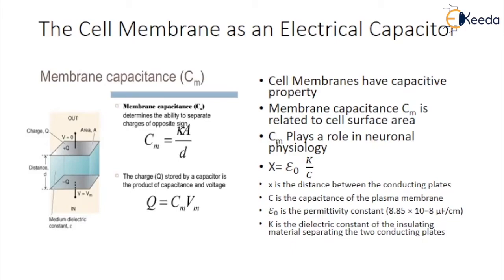Capacitance is directly proportional to the area of the plates and inversely proportional to the distance separating the two plates. Capacitance also depends on the characteristics of the insulating material between the plates which is the lipid of the plasma membrane in the cells. Biological membranes have a capacitance of approximately 10^-6 F, 1 µF per cm² of the membrane area.